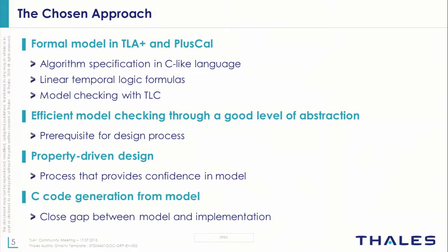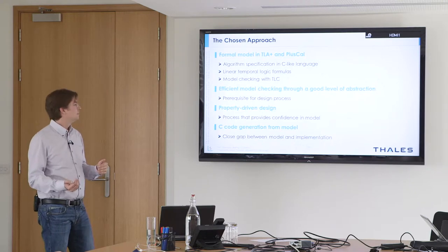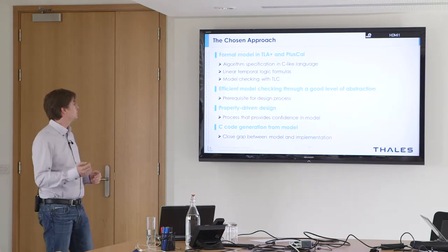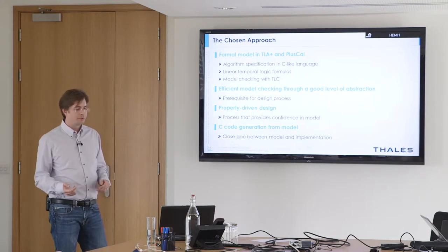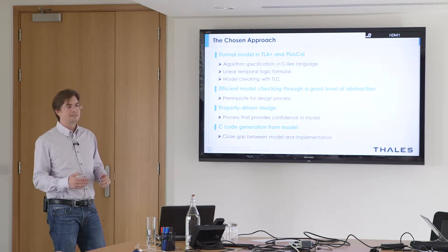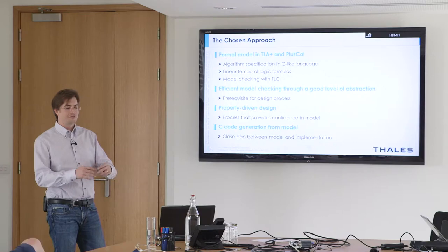After evaluation, we needed a really good level of abstraction for model checking, so we have different modules at different levels of abstraction. We came up with a method called property-driven design to systematically drive the step of determining whether your model does what it should. Somewhat unexpectedly, we also figured we could generate C code from the model, which really closes the gap between model and implementation — we can generate the core state machines directly.